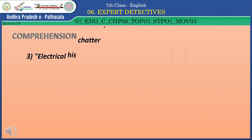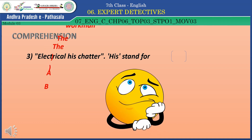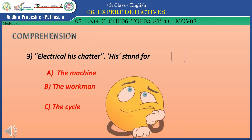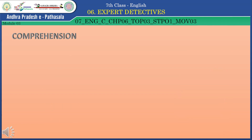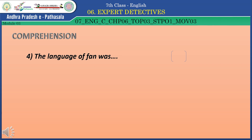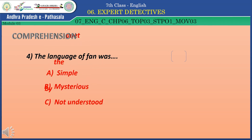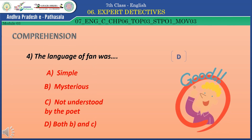Question 3 is noted. Question 4: The language of the fan was — Option A: Simple. Option B: Mysterious. Option C: Not understood by the poet. Option D: Both B and C. The correct answer is Option D — Both B and C.